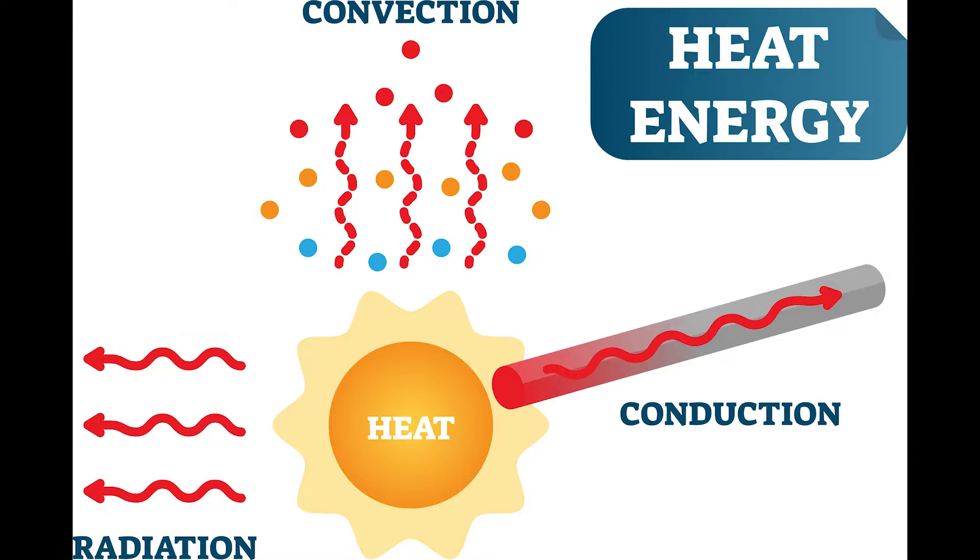The third process occurring in heated metal is radiation. Radiation is the conversion of heat to light. So the color of the light that you are seeing is directly related to the temperature of the metal.